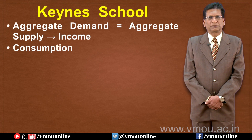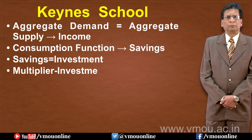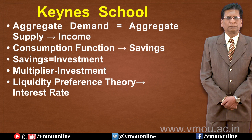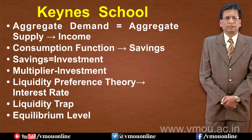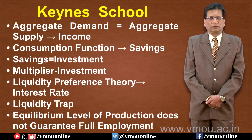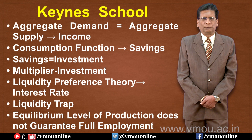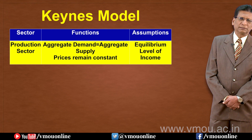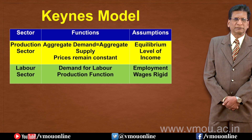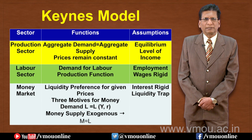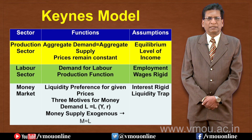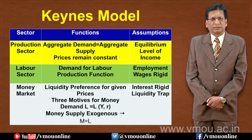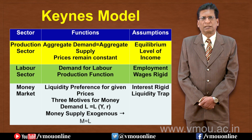In the Keynesian school of thought, aggregate demand and aggregate supply are central. The consumption function plays an important role, with income and expenditure being equal. The liquidity preference theory determines the interest rate, and general equilibrium does not guarantee full employment. In summary, the Keynesian model identifies three sectors: the production sector, the labour sector, and the money market.